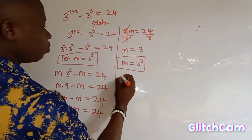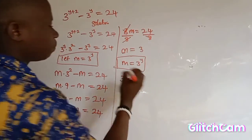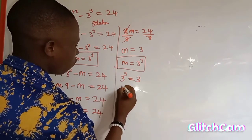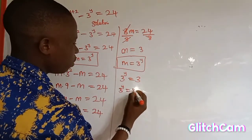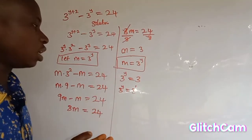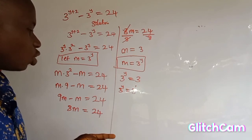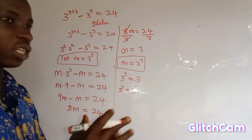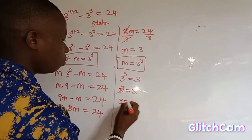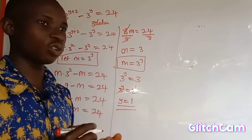So m equals 3 to the power of y, which is equal to 3. Now, 3 can also be written as 3 to the power of 1, because 3 to the power of 1 is still 3. Remember, if you have an indices equation and the bases are equal, you can equate the powers and cancel the base. So y is equal to 1. Therefore, the value of y is equal to 1.